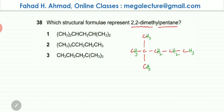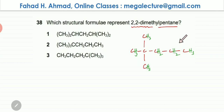Here you can see that I've added all the hydrogens. So this is 2,2-dimethylpentane. Now we need to figure out which of the structural formulas out of these three represents this molecule over here.